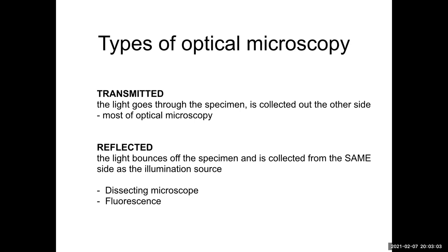However, instead of transmitting the light through, you can also choose to reflect the light — have the light source on the same side as your sensor, whatever you're using to collect your image, which is a camera or sensor. The light bounces off the specimen and is collected from the same side as the source of illumination. That includes a dissecting microscope and, of course, our favorite technique — fluorescence.